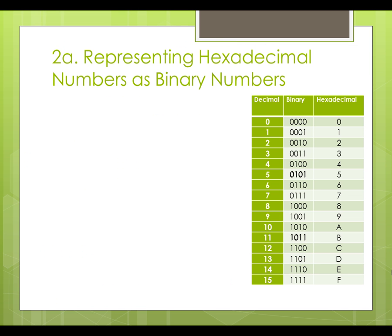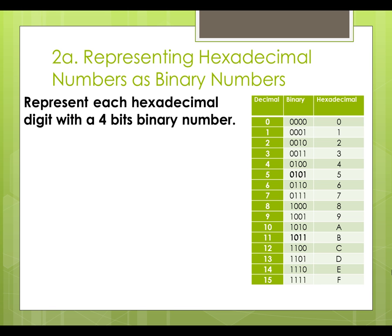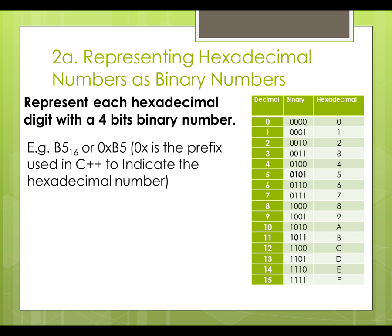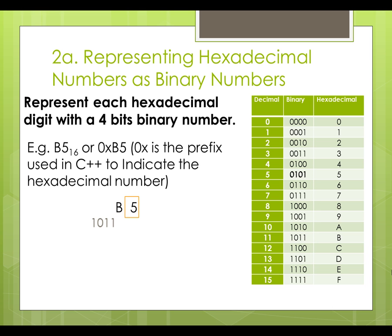To represent hexadecimal numbers as binary numbers, we will look at each hexadecimal digit. Refer to the table showing the corresponding decimal number, the binary representation and the hexadecimal representation. We can find a 4-bit binary number for each hexadecimal digit. For example, we can convert hexadecimal b5 to its binary form. Note: in C++, you can prefix the number with 0x to indicate that the number is in hexadecimal form. Referring to the table, hexadecimal b can be represented by 1011, and hexadecimal 5 can be represented by 0101. So hexadecimal b5 can be represented by 10110101.